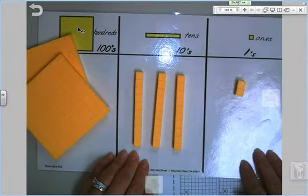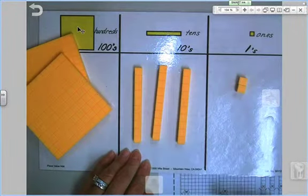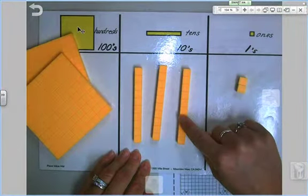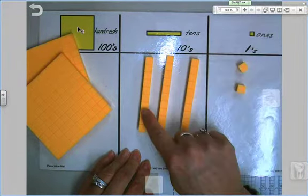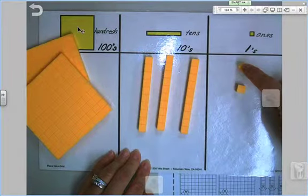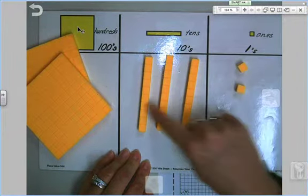So we're going to zoom back out. So here I have three tens. Also the value is 10, 20, and 30. So right now I would have 10, 20, 30, 31, 32. Three tens, two ones.